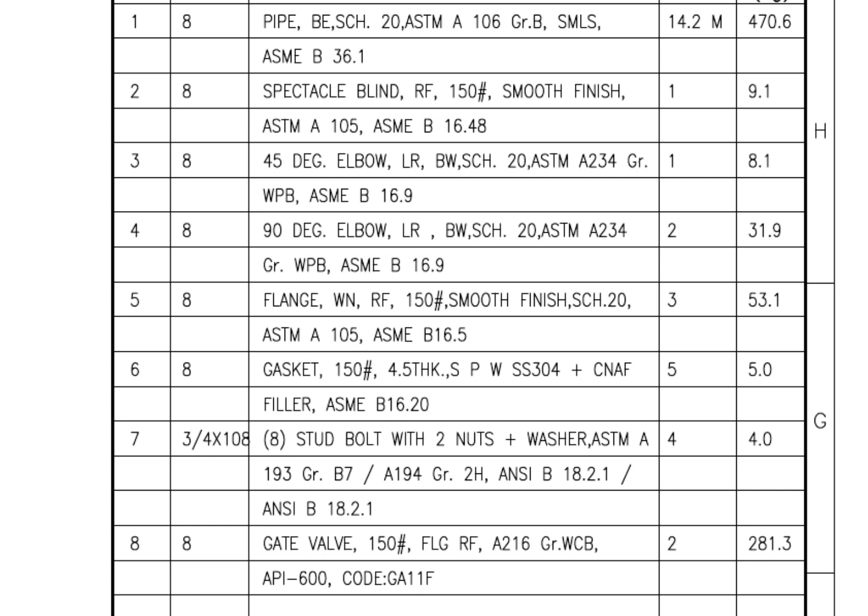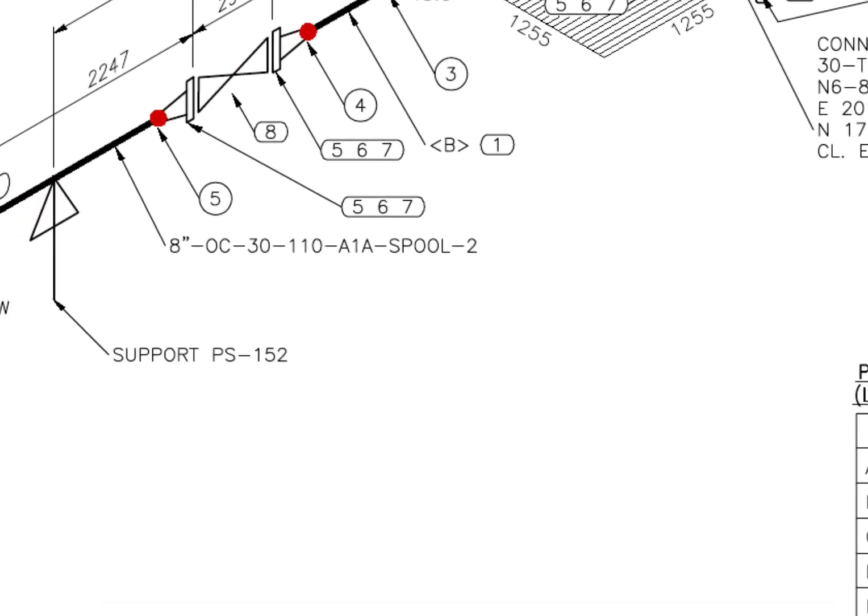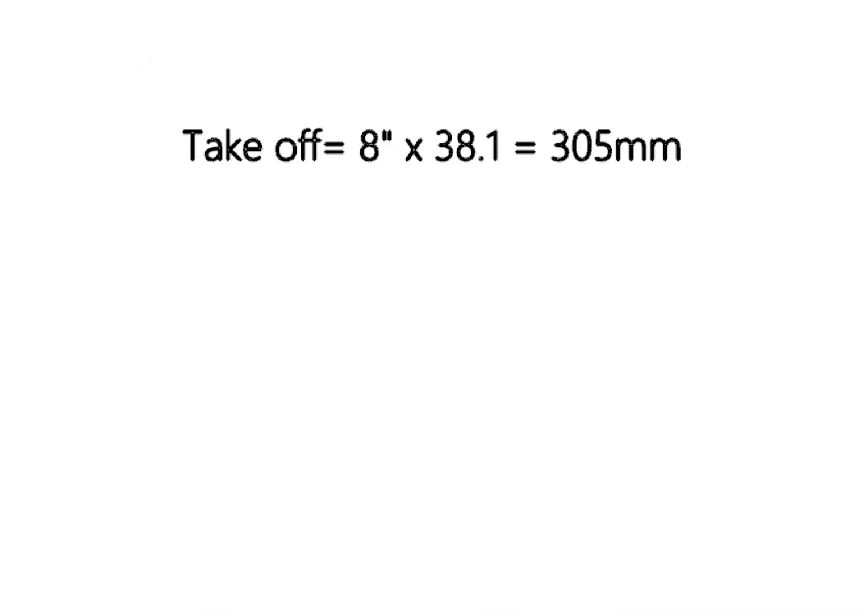Let us calculate the true length of the pipe. To calculate the true length, we need to know two things: the take off length and the welding gap. How to calculate the take off of a long radius 90 degree elbow? The formula is diameter in inches multiplied by 38.1. Let us assume the welding gap is 3 millimeters.